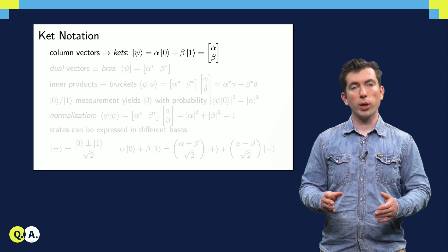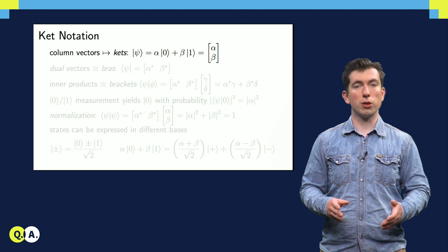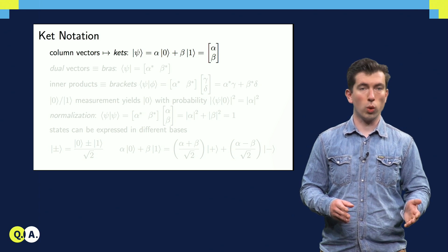For example, we can express the state of a qubit, a two-level system, as a linear combination of two basis vectors, which we call 0 and 1.